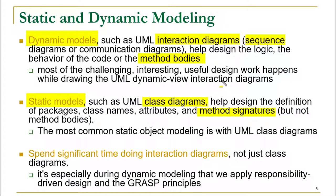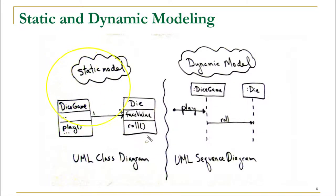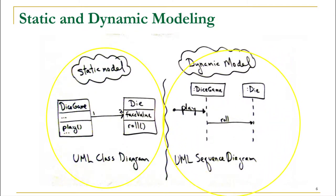We must spend significant time doing the interaction diagrams, not just the class diagram. Make sure you spend enough time with sequence and communication diagrams, because they help you get your method definitions. On the left-hand side you can see a static model — a UML class diagram — and on the right-hand side a dynamic model — a UML sequence diagram. Notice that the play method is part of the DiceGame class in the class diagram, which is why we call the play method on DiceGame in the sequence diagram.